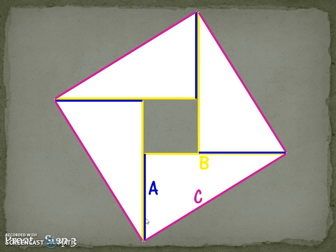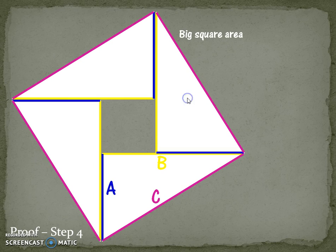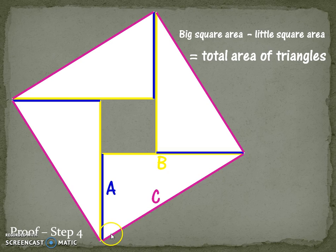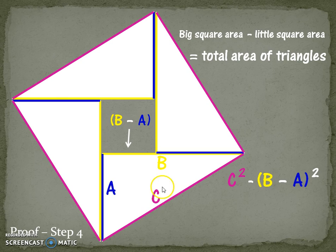We're trying to show a different way to find the total area of the triangles. If we take the area of the big square following the purple and subtract that by the area of this little square inside, we will be able to find the total area of the triangles. The area of the big square, C times C, that's going to be C squared, minus the total area of the little square. One of the sides, right here, it's going to be B minus A. So it's length times width, so it's going to have to be B minus A squared. The area of the big square minus the area of the little square equals the total area of the triangles.